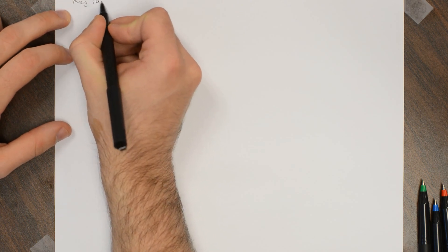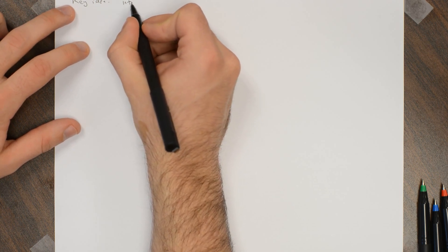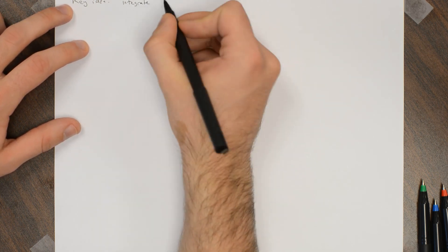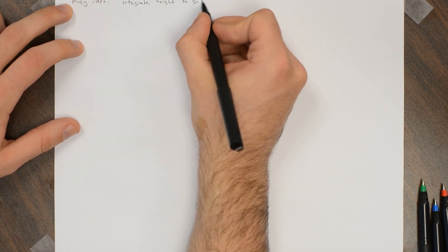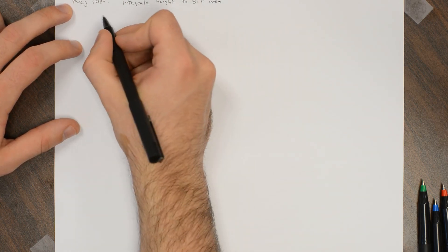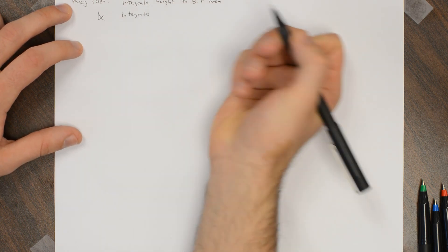All right, so we've established this key idea that you integrate height to get area, and you integrate cross-sectional area to get volume.